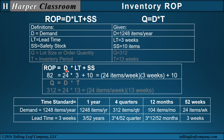The ROP equals demand times lead time plus safety stock. But if our lead time is in weeks, then our demand must be converted from years to weeks. So 1,248 items per year divided by 52 is 24 items a week. We use 24 items per week because these time units must be the same. So our ROP equals 82.